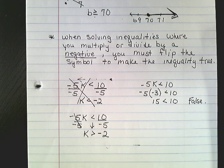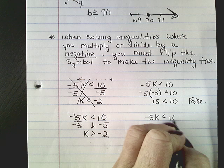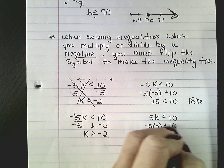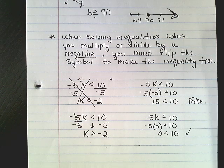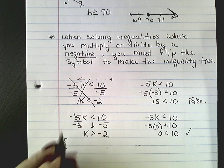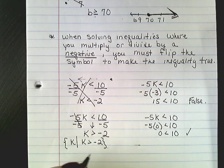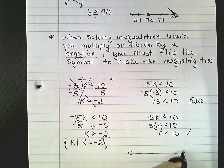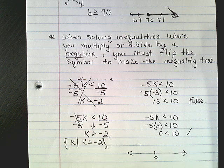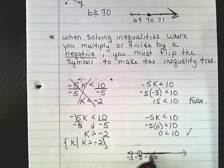Let's verify: what's greater than negative 2? Zero. Testing: negative 5 times 0 is 0, and 0 is less than 10 — correct. Whenever you multiply or divide by a negative number, flip the symbol. Set builder notation: for all k, k is greater than negative 2. On the number line with negative 3, negative 2, and negative 1, k is greater than negative 2, so negative 2 has an open circle and we shade to the right.